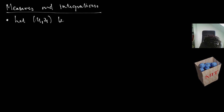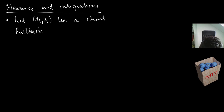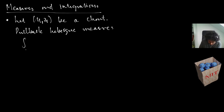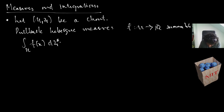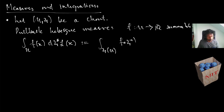Let's look at a chart on our manifold with boundary and consider the pullback Lebesgue measure. If f is a function from U to R that is integrable, then in this setting we can define the pullback Lebesgue measure by simply going into the chart and integrating f. No mystery there.